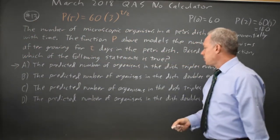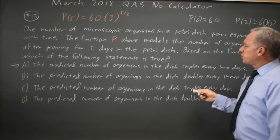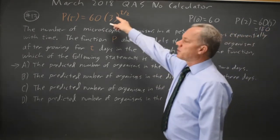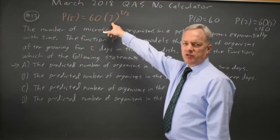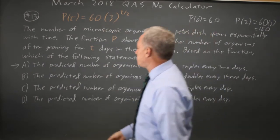Let's check choice B, doubling every three days, but if T equals 3, we're going to multiply by 3 to the 1.5, which is more than double, so B does not work.